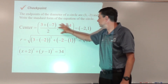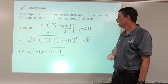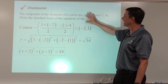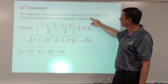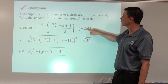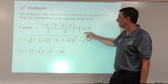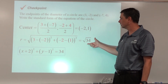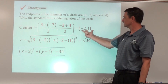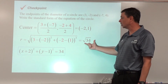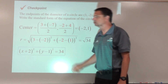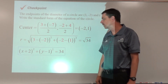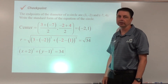That finds our center at (-2, 1). To find the radius, pick either endpoint and find the distance to the center. Working that through gives the radius as √34. Plugging h = -2, k = 1, and r² = 34 into the standard form equation, our final answer is (x + 2)² + (y - 1)² = 34.